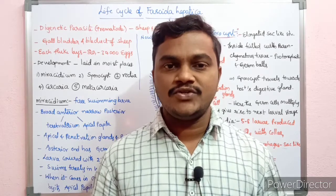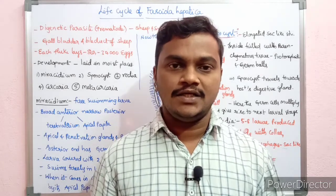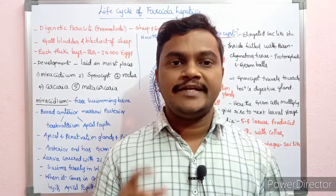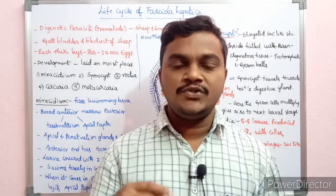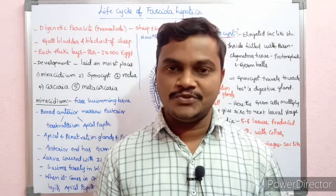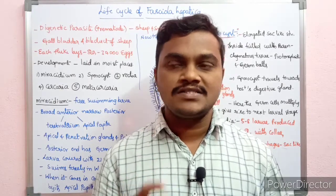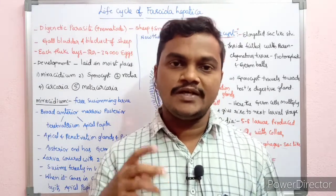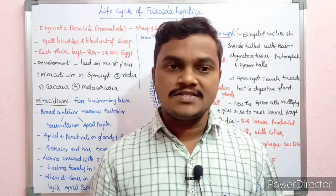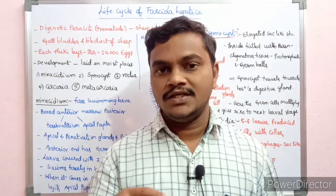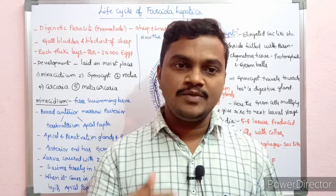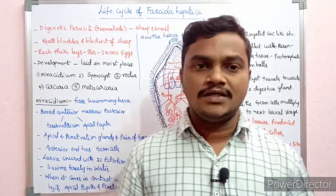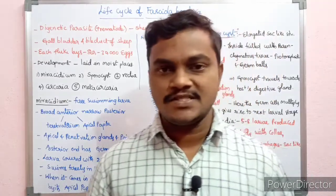First and foremost, Fasciola hepatica is related to Trematode. It causes liver rot disease in sheep and goats. Fasciola hepatica is a genus species.